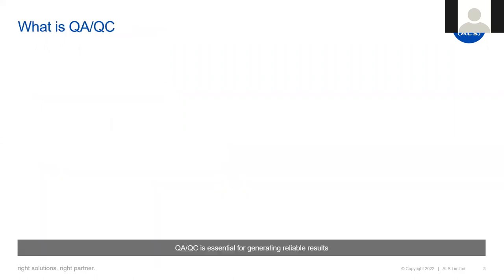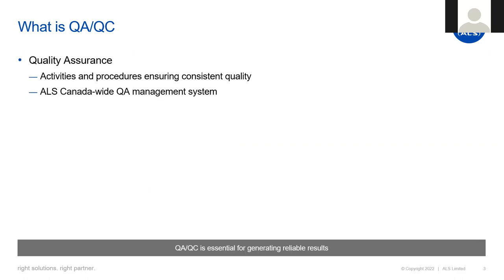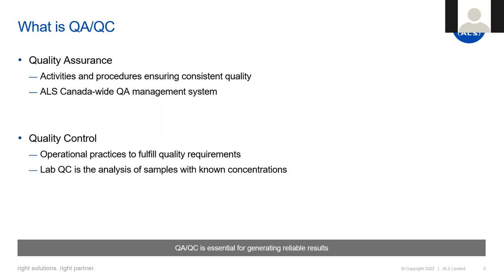What is QAQC? QAQC is a term we've all heard, but they are two different concepts. QA, or quality assurance, refers to the systems we have in place that ensure consistent quality is delivered — the actual activities and procedures implemented in the laboratories, known as a quality management system. At ALS Canada, we have a nationally harmonized quality system, ensuring that the systems in place in one location are the exact same as in a different location. Quality control is the operational practices performed to fulfill the quality requirements defined by our quality system — specifically, the analysis of QC samples with known concentrations. A key theme is that QAQC is essential for generating reliable results.